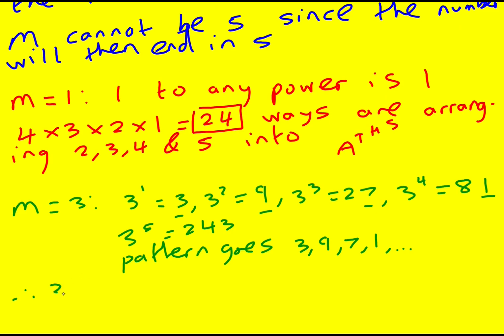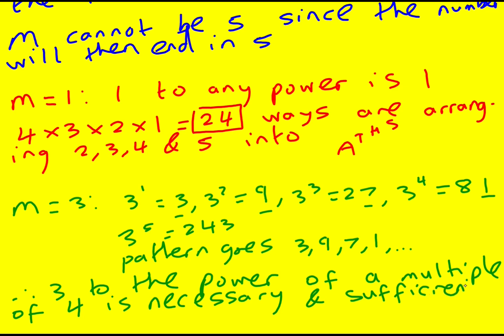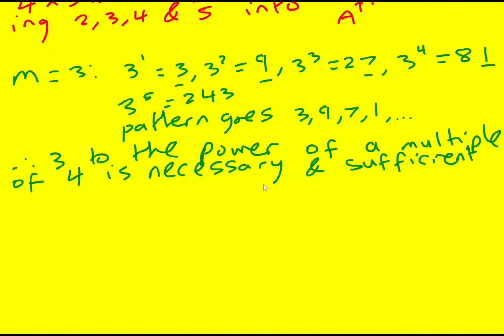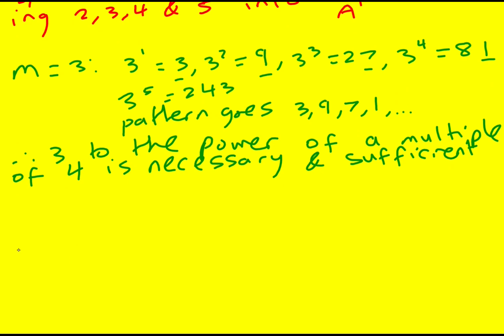Therefore, 3 to the power of a multiple of 4 is necessary and sufficient. Yes, we have to have 3 to the 4 or 3 to the 8 or 3 to the 200, then we'll be okay. So let's now look at 3 to the A to the T to the H to the S.